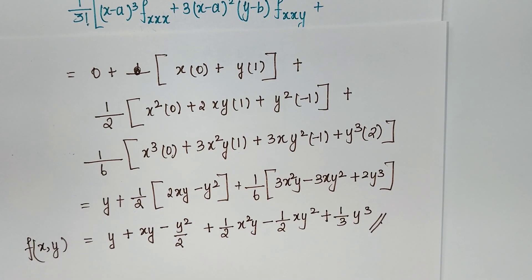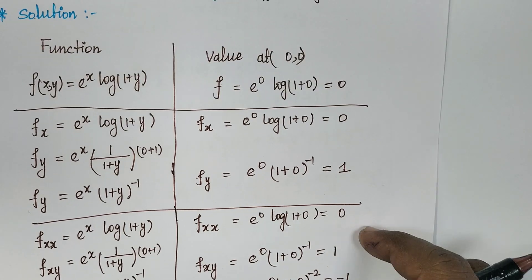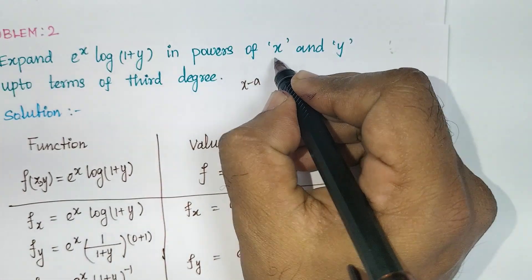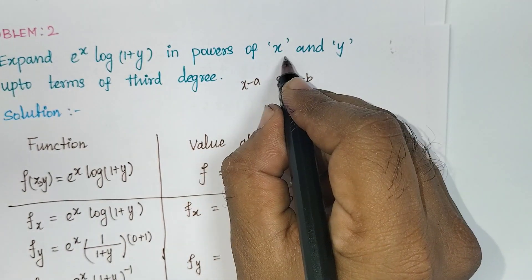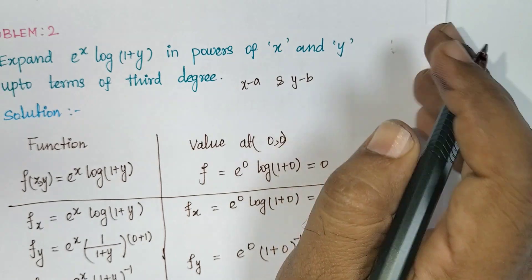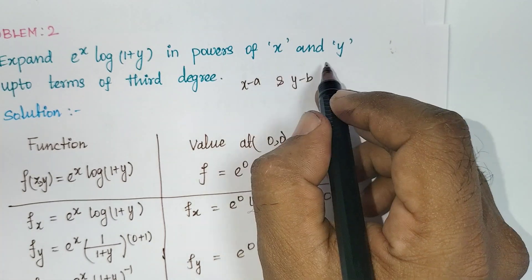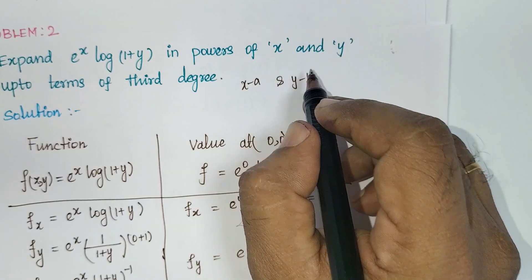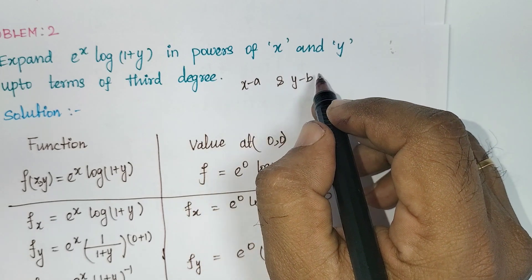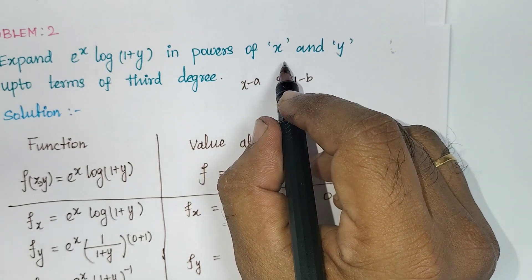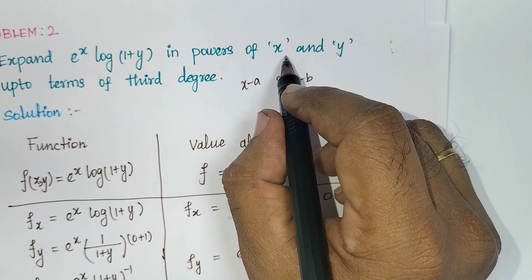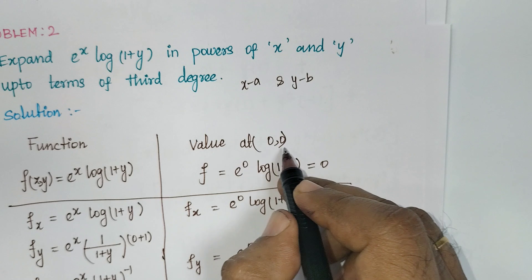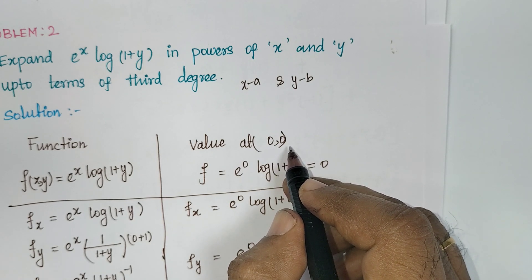To summarize: first, you should understand how to partially differentiate. If you know partial differentiation, then remember how to identify the points. Here, the problem says 'in powers of x and y,' which means a = 0 and b = 0. Sometimes they may give a point like (x − 1) or (y + 1) — we will continue with that model in the next problem. In the first problem, the point (0, π/2) was given directly, so a = 0 and b = π/2. Here, since no point was mentioned, we take a = 0 and b = 0.